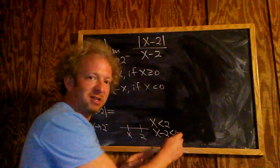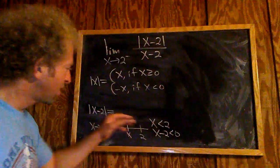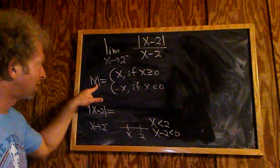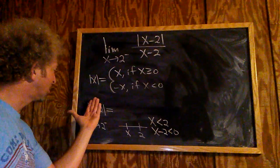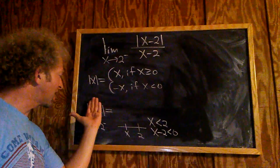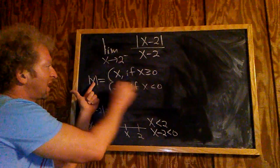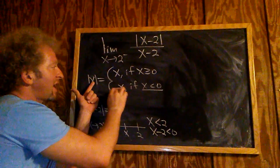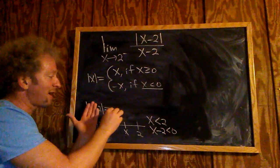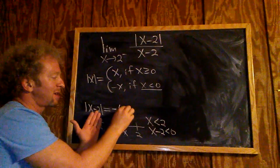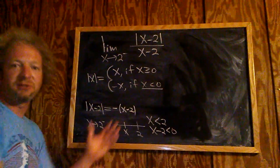If you were approaching from the right, it would be greater than 0, but here it's less than 0. Now you apply the formula. Here x minus 2 is your x, and it's less than 0. So whenever x is less than 0, you get negative x. Here we get negative (x minus 2) because that's our x. There are different ways to go through this, but this is probably the shortest.